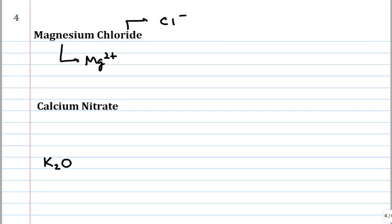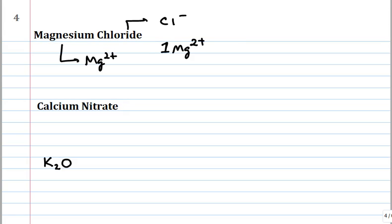We've got to combine Mg2+ and Cl- to get electrical neutrality. We need one Mg2+ plus two Cl- — two positive charges and two negative charges. The formula will be MgCl2: one magnesium ion for every two chloride ions. Calcium is always and forever only Ca2+ as an ion — you know that from your ion sheet and from the periodic table.